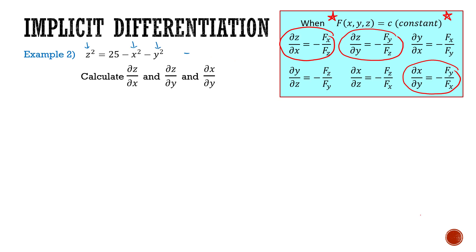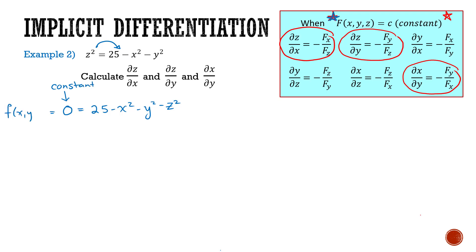So what I'm going to do is rearrange the equation and move z squared to the other side. Now I have 0 equals 25 minus x squared minus y squared minus z squared. Now I have a constant on one side of the equation, so f(x, y, z) satisfies the condition of being equal to a constant — the constant being 0. Now I can use my partial derivative rules.